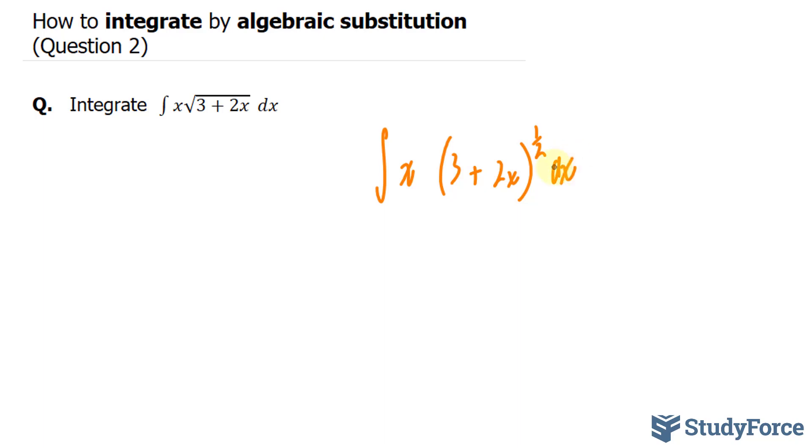In a situation like this, what you want to do is set the radical part of the function, namely this part, as an arbitrary letter. Let's call it z.